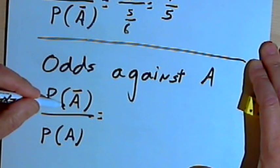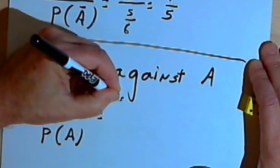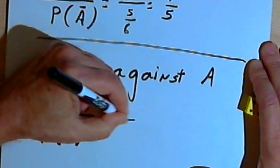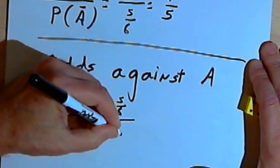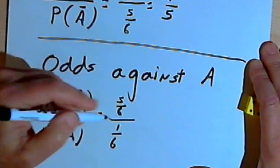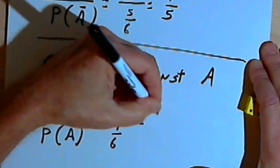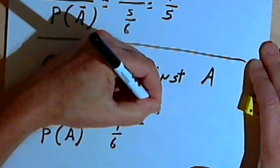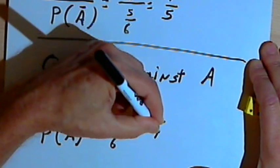Well, the probability of the complement of A was 5 over 6, and the probability of A was 1 over 6. So I've got 5 over 6 divided by 1 over 6. When I reduce that, I'm going to get 5 over 1.